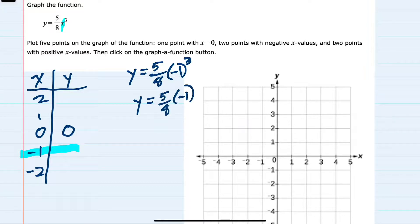So our y value will be negative 5 eighths. So negative 5 eighths goes into the table.